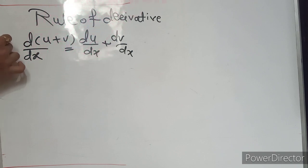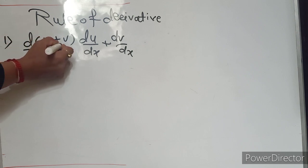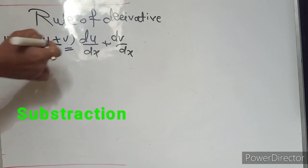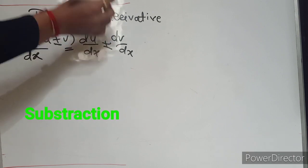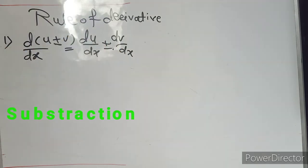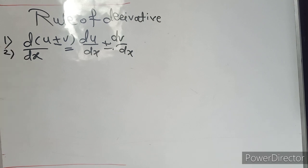If we have a subtraction in between — agar beech mein subtraction hai — then take the derivative of both functions separately, and just change the addition sign to subtraction. Means just put the minus sign there. This is the second rule for derivative.